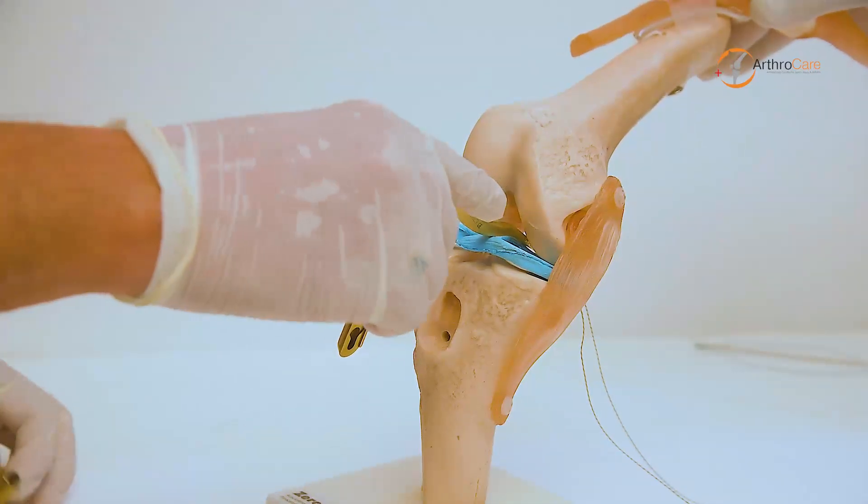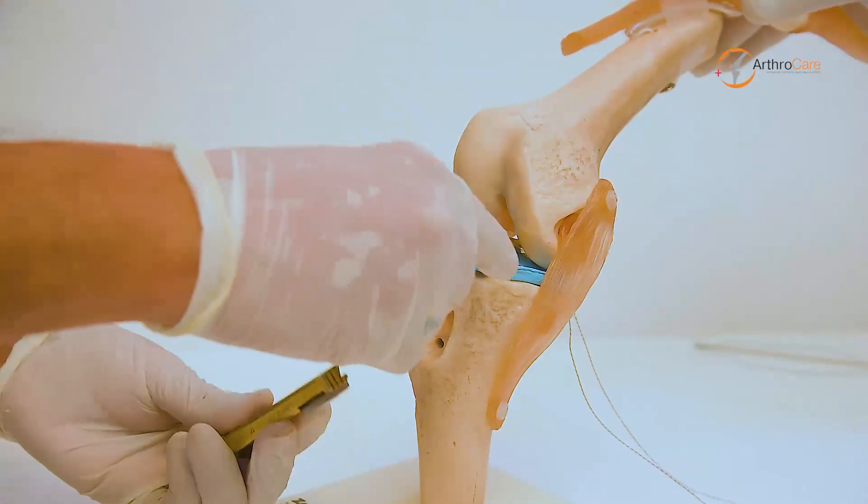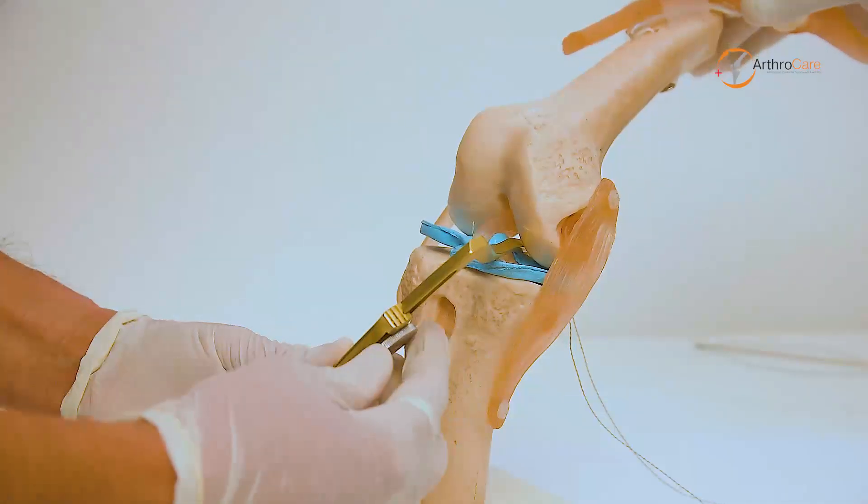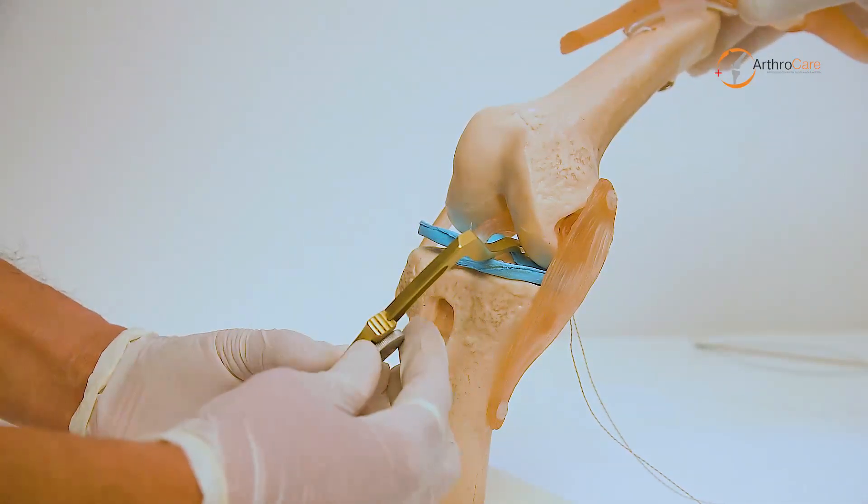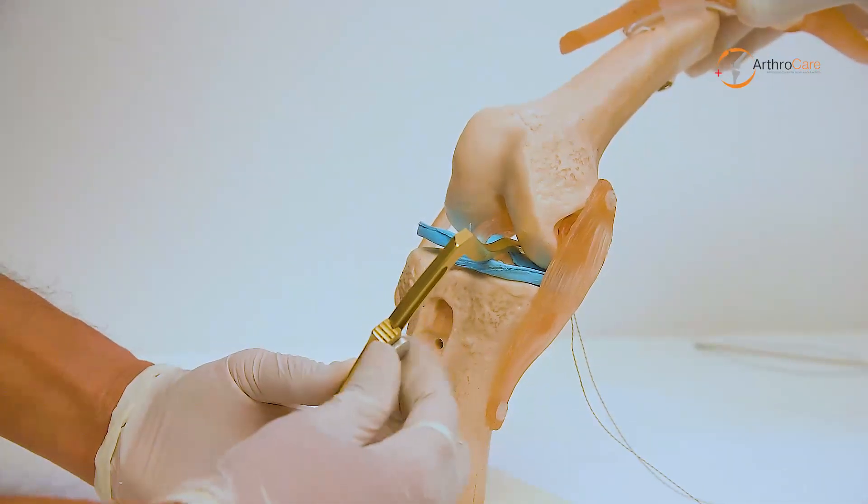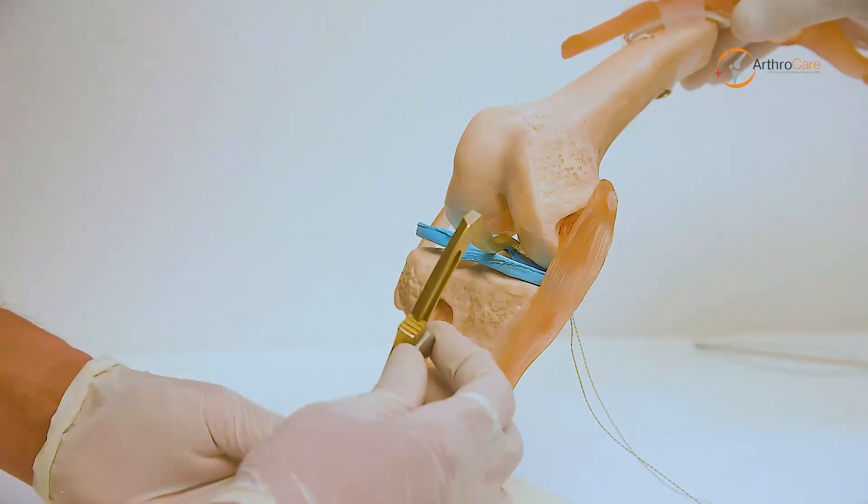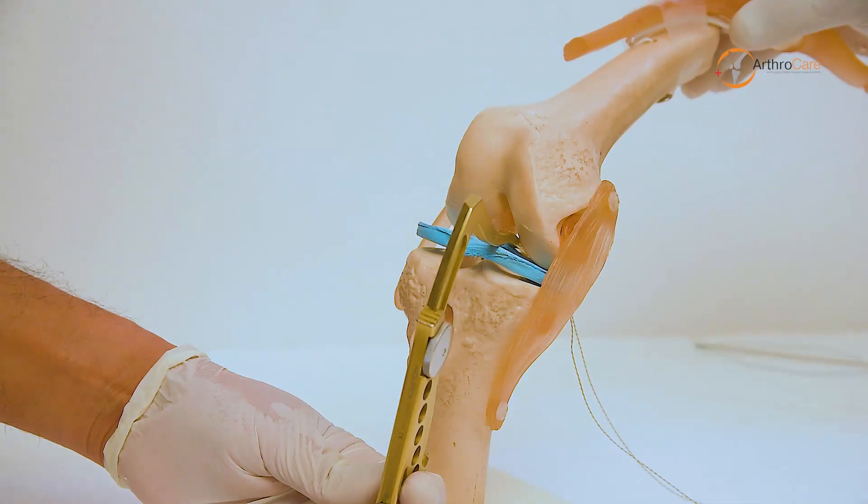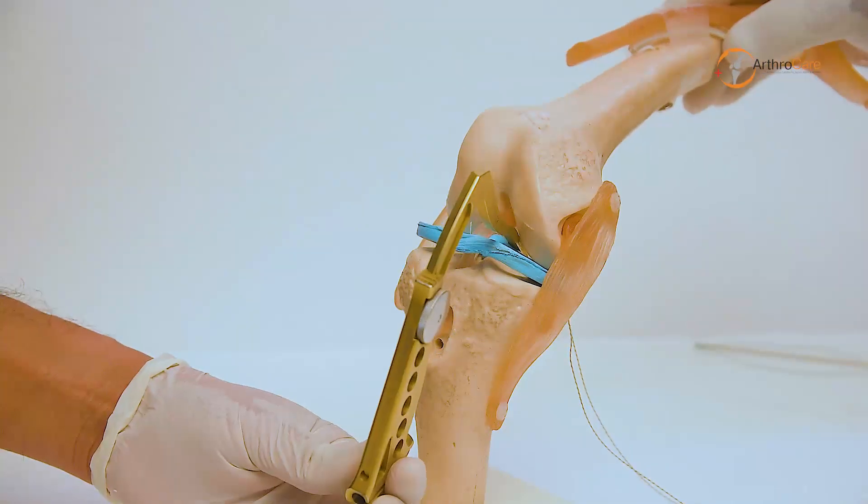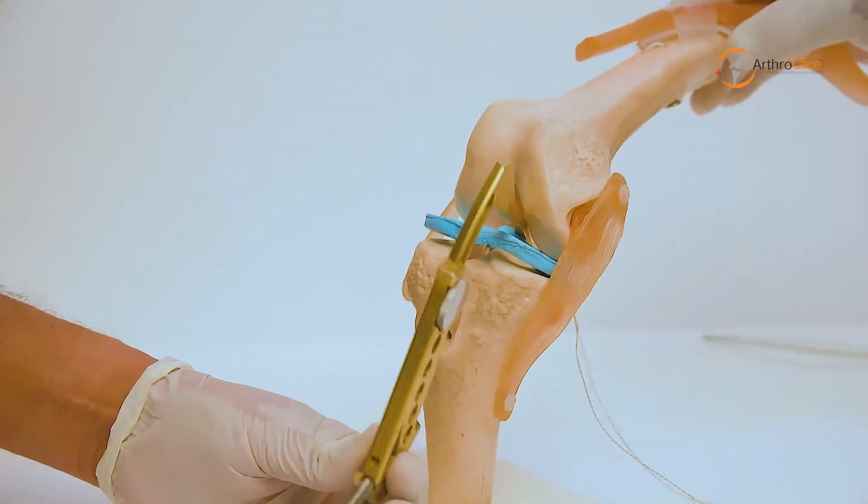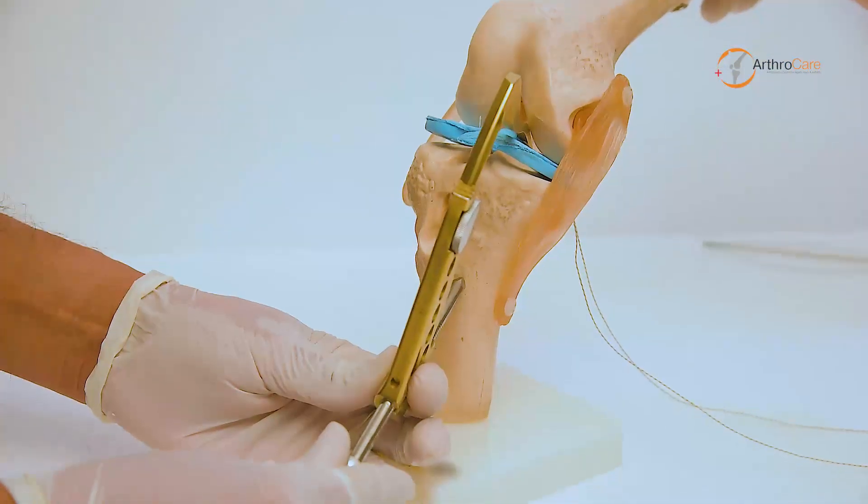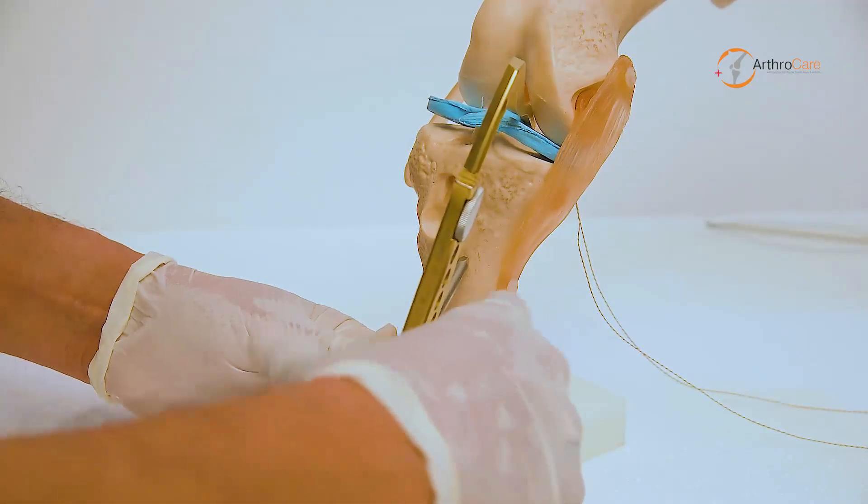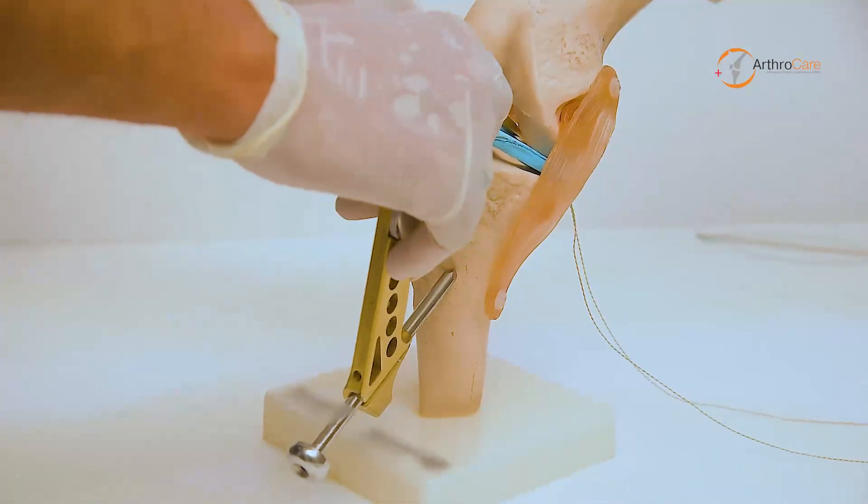This is a PCL jig guide to create the PCL tibial tunnel. The PCL tibial guide is placed at the perfect position—the apex of the crater—and the angle is fixed appropriately. The aim should be just below and medial to the tibial tubercle.